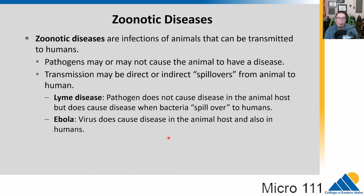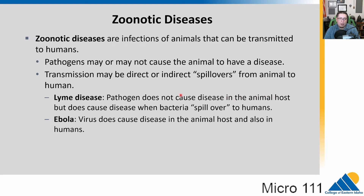Many things we've discussed are zoonotic diseases — infections of animals that can be transmitted to humans. The pathogens may or may not cause disease in the animal. Many result from direct or indirect spillover events where humans come into contact with animals and disease is then spread through the human population. For example, the Lyme disease pathogen doesn't cause disease in its animal host but does in humans. Ebola causes the animal host to die and also the human host — with about a 50% chance of dying if infected.